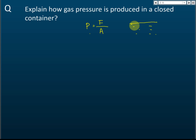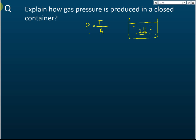In the last lessons we learned about pressure in liquid. Liquid pressure is caused by the weight of the liquid. Weight is a force, and the weight of the liquid pressing on a surface area produces liquid pressure.